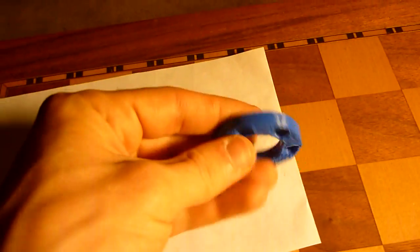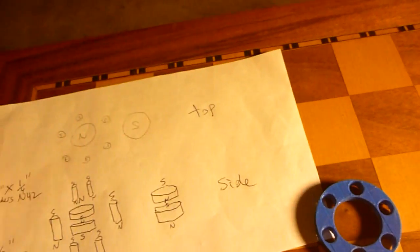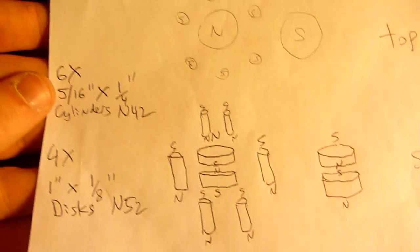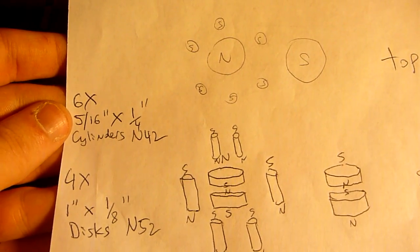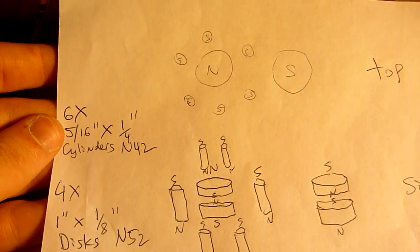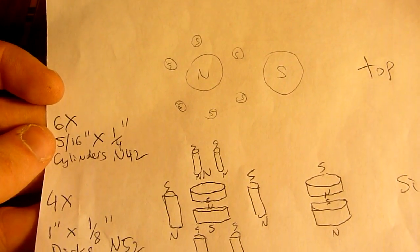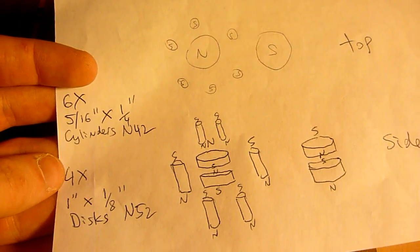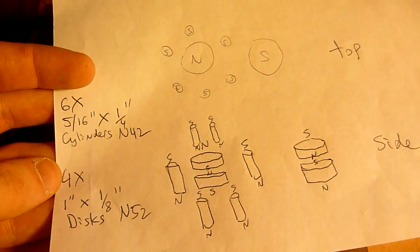Okay, so here we go. This is my early 3D print of the construct. So I used six 5-16th diameter magnets by a quarter inch cylinders. And I used four 1 inch by 1.8 inch discs.